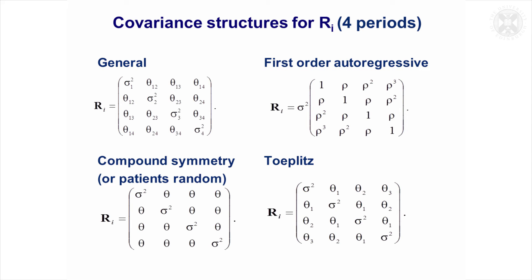Another one that often is appropriate is known as the Toeplitz. I don't know where the Toeplitz came from, it's probably the name of some statistician, but it's basically a banded structure. So you've got bands of covariances depending on how widely the visits are separated.